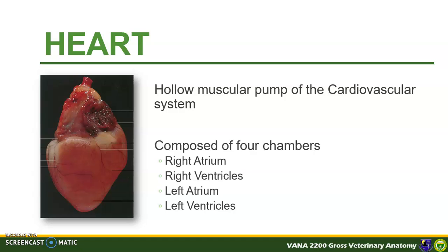Now let us begin with the most important part of the system: the heart. The heart is a muscular four-chambered organ that pumps blood in the circulatory system. In the dog, the heart is ovoid in shape with a blunt apex. The chambers include the right atrium and ventricle, and the left atrium and ventricle.